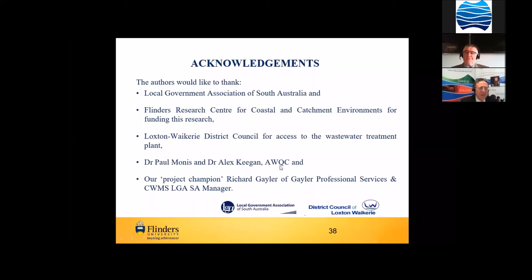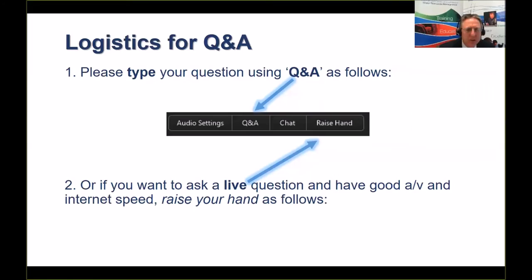The benefits of adopting high-rate algal pond technology include reduced capital costs, reduced operating costs compared to electromechanical systems, lower energy consumption and greenhouse gas emissions, reduced evaporative losses, and more beneficial reuse with both the solids and liquid phase. Thank you very much. That's excellent — I wish you could hear the clapping, Howard, because it's a story I could hear two or three more times. That table — five days versus 30 days retention time and the chemistry — is really stunning. We've got a number of questions coming through, so let's get stuck into those straight away.